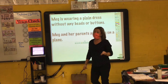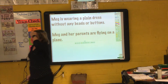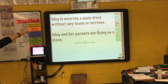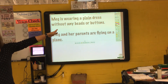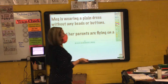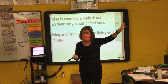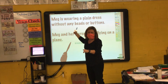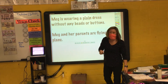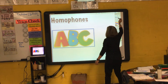Homophones can be a little tricky. If someone is reading you a sentence and you can't see it, you have to listen to the context and the other words around it to help identify which version of that homophone it is. Homophones are a little bit easier when you can see them in writing.